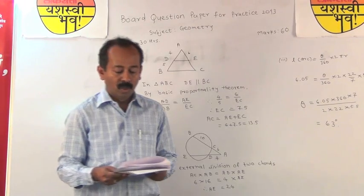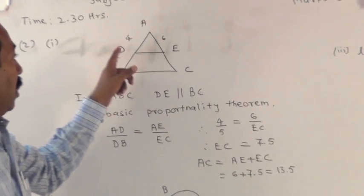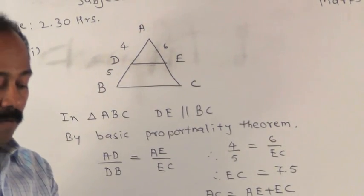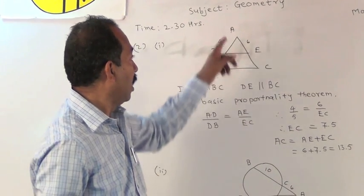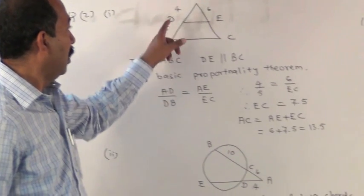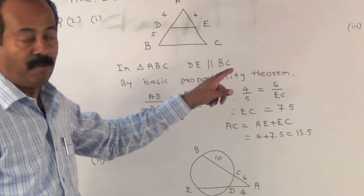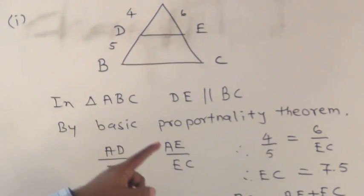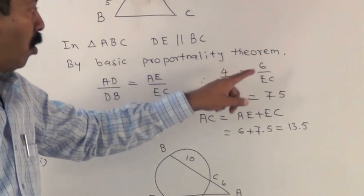Let us go for question number 2. In the figure, triangle ABC... Now, let us go for the solution. In triangle ABC, DE parallel to BC. So, by basic proportionality theorem, we get AD upon DB is equal to AE upon EC.